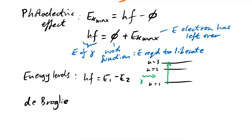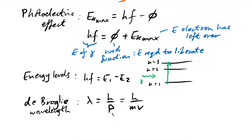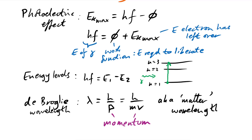The de Broglie wavelength equation is important and applies to any particle: lambda = h/p = h/mv, where lambda is wavelength, h is Planck's constant, and p or mv is momentum. This is sometimes called the matter wavelength equation because any particle can have a wavelength and act like a wave — we use it especially for electrons.